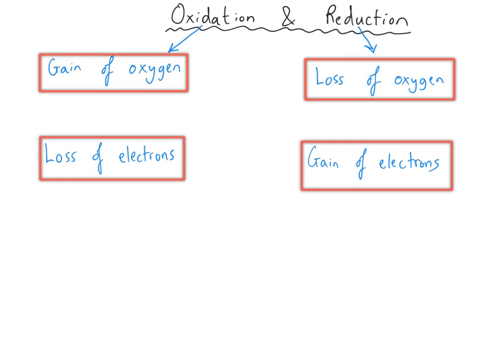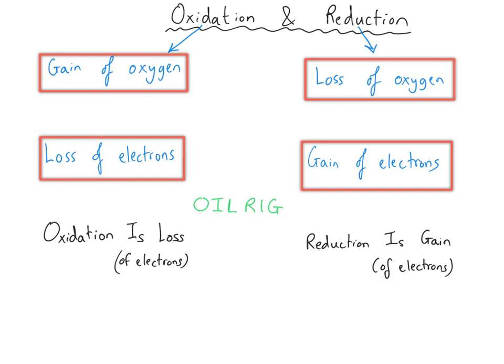The gain of oxygen being oxidation is probably quite obvious, and once you know that, you'll know that reduction is therefore going to be the opposite. But electrons are less obvious. Helpfully, there is an acronym to help you remember which is which, and that acronym is OILRIG, which stands for oxidation is loss of electrons and reduction is gain of electrons. So that makes things a lot easier if you can remember the acronym OILRIG for the electron definitions.